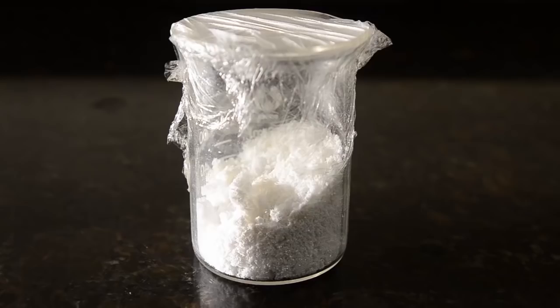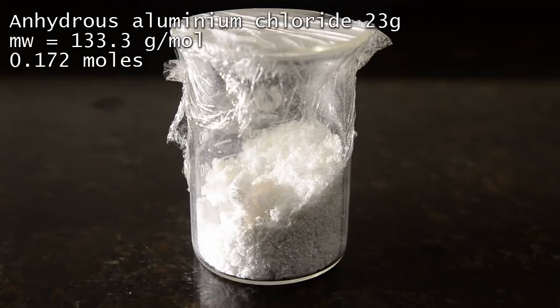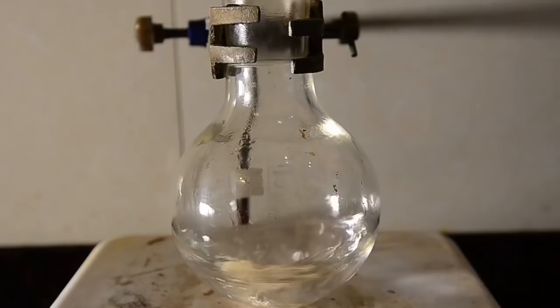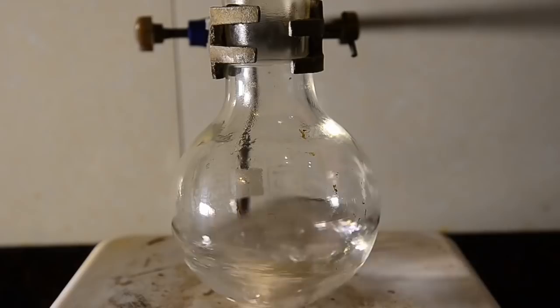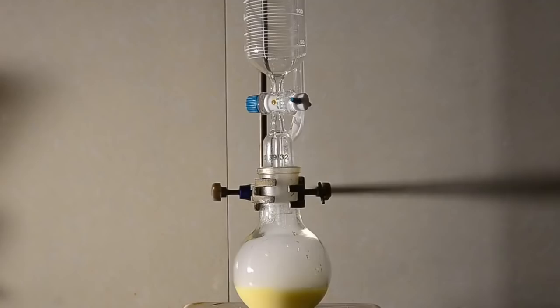Now weigh out 23 grams of anhydrous aluminum chloride. Keep this wrapped up to avoid moisture. For information about how to make this from zinc chloride, check out our other video linked. Add the aluminum chloride to the benzene in the flask with stirring. We had a slight yellow color on complete addition, but we're not sure why.